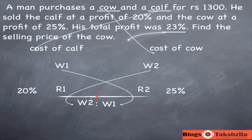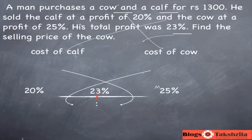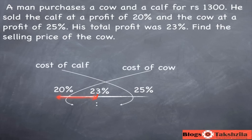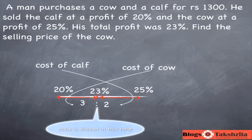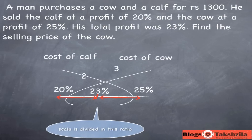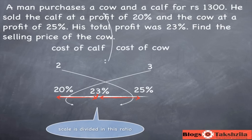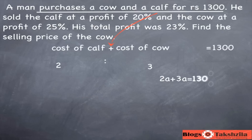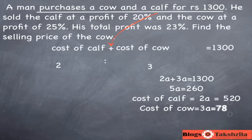We have the ratio, which is 2 is to 3. We have to think: what is this the ratio of? This is the ratio of weights, and in this situation the weights represent the cost price. He says a man purchases a cow and calf for Rs.1300. This 1300 is the total cost price, so CP1 plus CP2 is 1300, or weight 1 plus weight 2 is 1300.